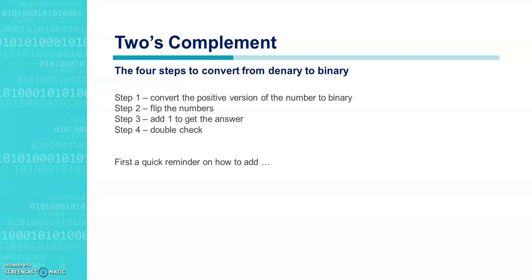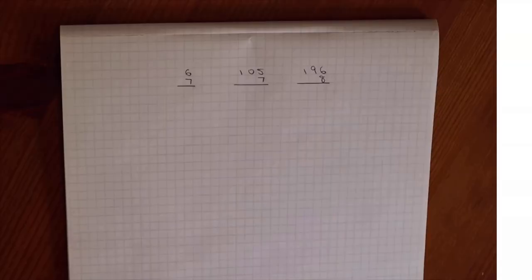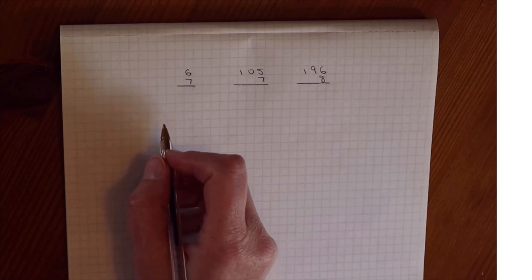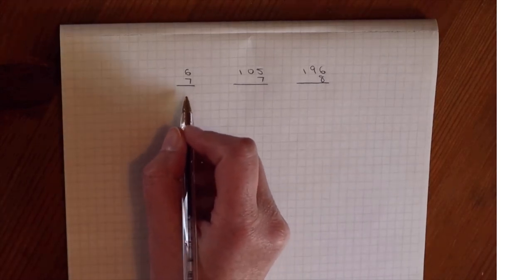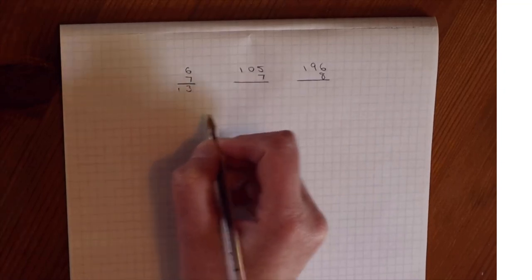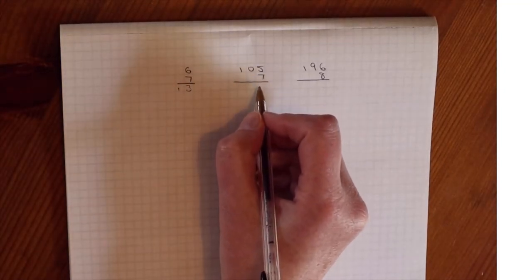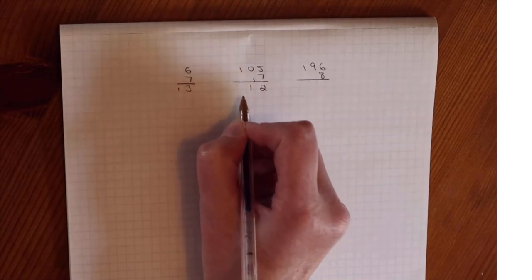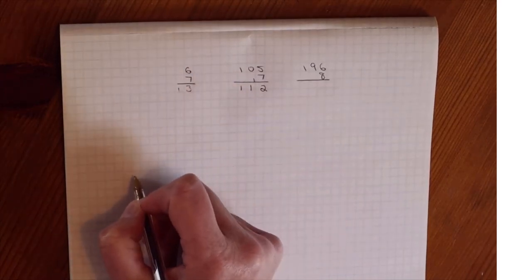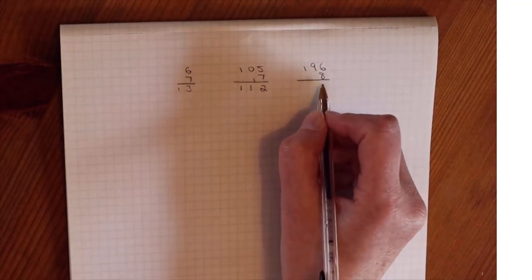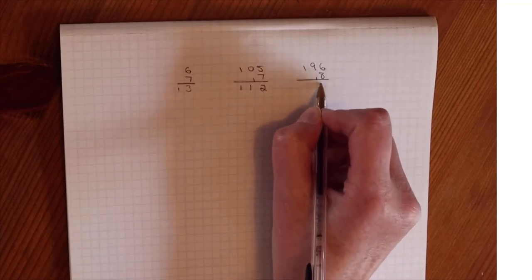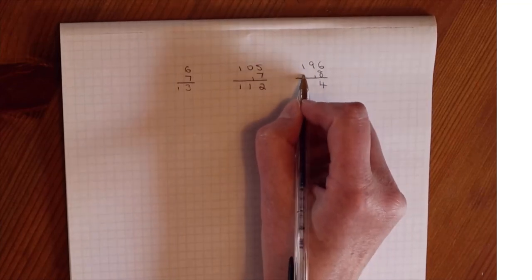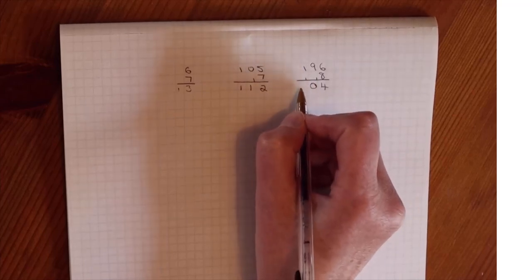First, a quick reminder on how to add using column addition. 6 plus 7 is 13. For 105 plus 7: 5 plus 7 is 12, put down the 2 and carry the 1, then 1 plus 0 is 1, nothing plus 1 is 1, so the answer is 112. For 196 plus 8: 8 plus 6 is 14, carry the 1, put down the 4; 1 plus 9 is 10, carry the 1, put down the 0; and 1 plus 1 is 2, giving 204.